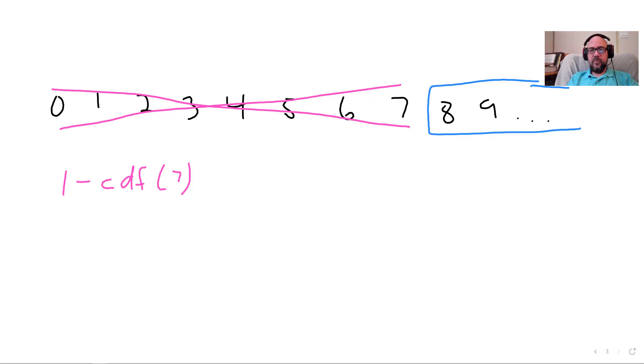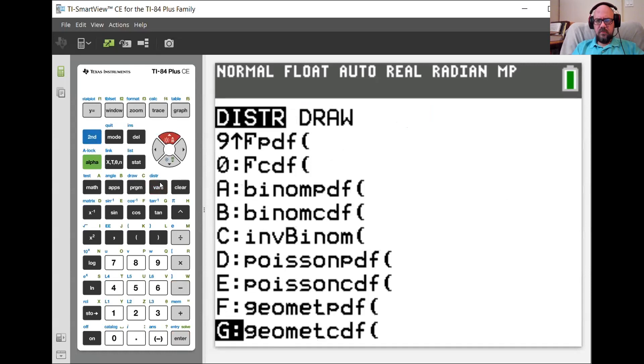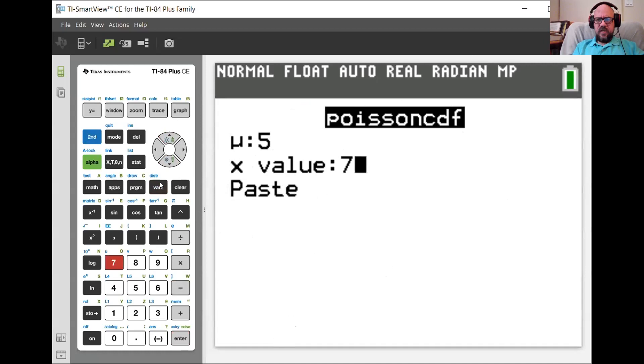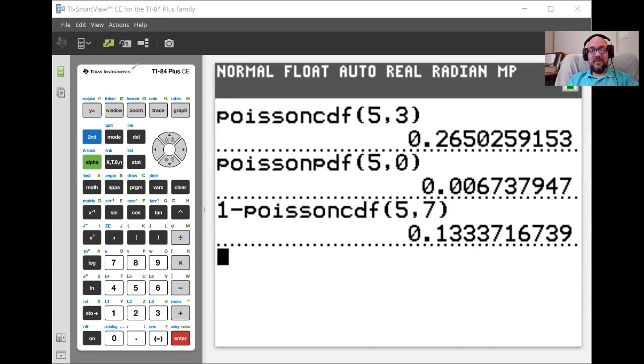So I'm going to do one minus Poisson CDF, mu of five X of seven. And we get this. So there's a 13% chance that's awfully high of getting eight or more industrial accidents in a single year. That sounds like a lot of industrial accidents. I probably don't want to work there. What we said was 13.33%.